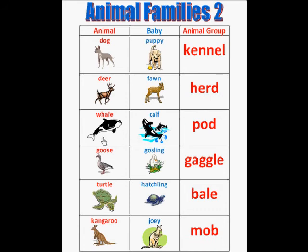Then we have a whale, and the whale's baby is called a calf, and the animal group is called a pod.